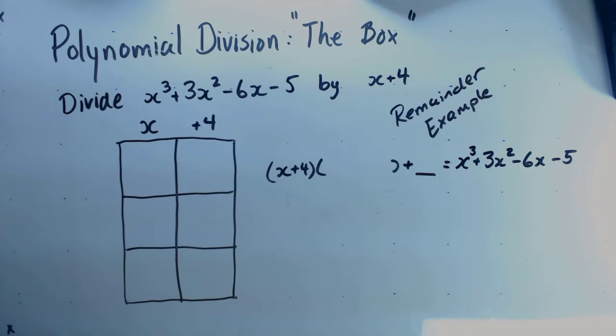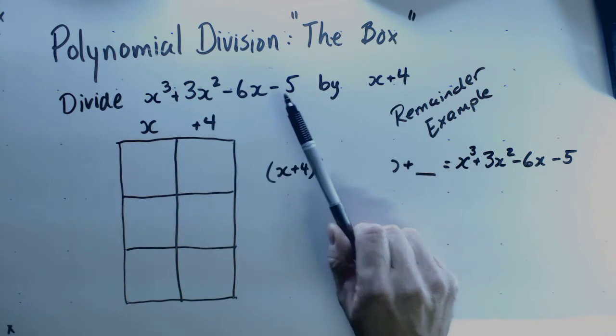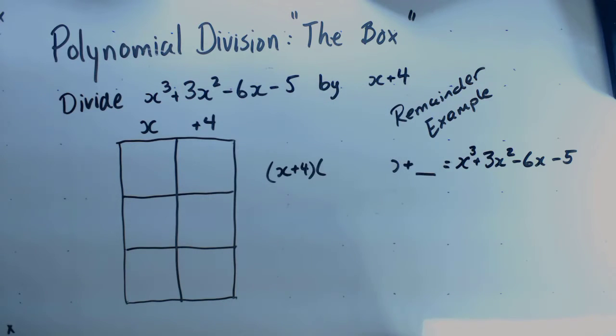We are doing polynomial division using the box, and in this case there's going to be a remainder. We are going to divide x³ + 3x² - 6x - 5 by x + 4.